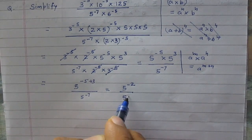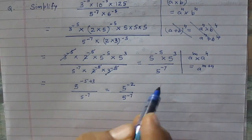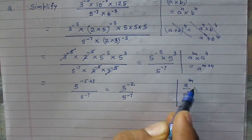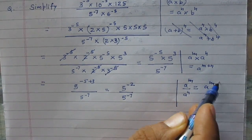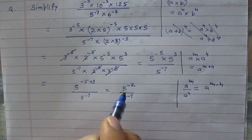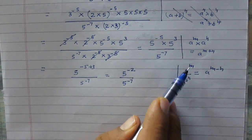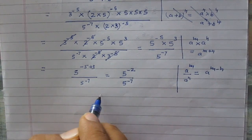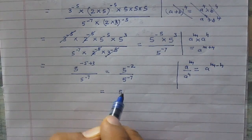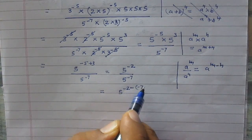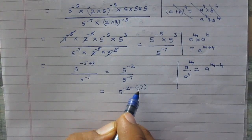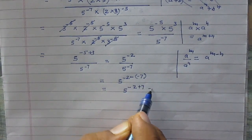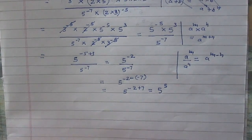Using the identity a raised to power m divided by a raised to power n equals a raised to power m minus n, where a is 5, m is minus 2, and n is minus 7, the result is 5 raised to power (minus 2 minus of minus 7). Since minus of minus 7 is plus 7, this gives 5 raised to power minus 2 plus 7, which equals 5 raised to power 5. This is the final answer.